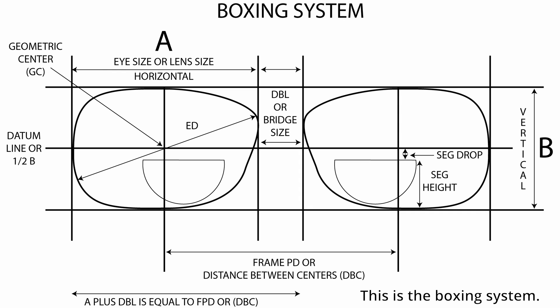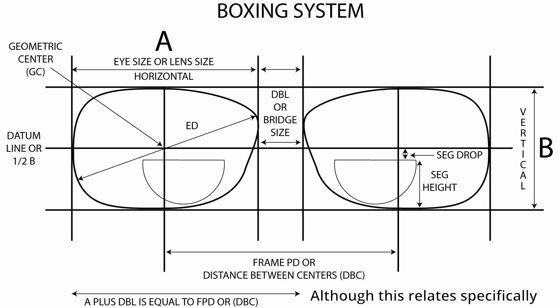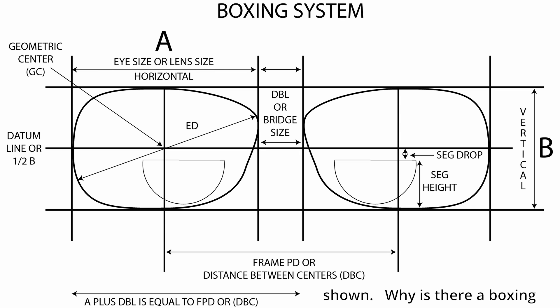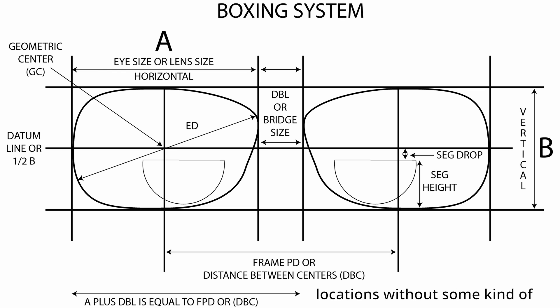This is the boxing system. It's a drawing of two lenses as they would appear on someone's face looking towards you. Although this relates specifically to frames, there is no frame shown. Why is there a boxing system? Because due to the shape of the lenses, it would be difficult to define sizes and locations without some kind of reference.